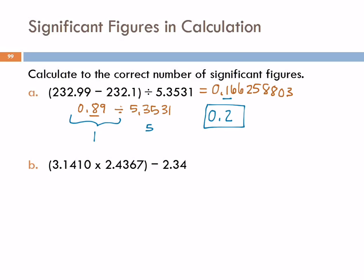Another student question: when you do this, you're not going to look at significant figures in the original equation at that point? That is correct. When I get to this point, I am not looking at the number of significant figures in the numbers in the original equation, because when I subtract here, I am not concerned about number of sig figs, but about number of digits. That's something that's kind of hard to get your mind around. You have to look at each of the operations separately — you can't just combine them.